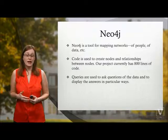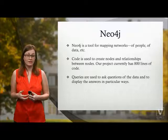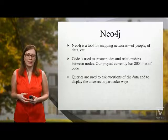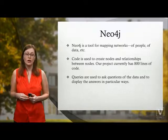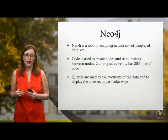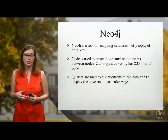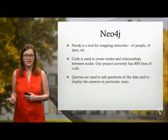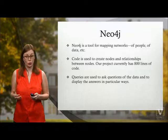The second major part of this project is the creation of a Neo4j graph gist. Neo4j is a tool for mapping networks of people, data, and so on. Code is used to create nodes and relationships between the nodes — our project currently has 800 lines of code. Queries are then used to ask questions of the data and make the data display in particular ways.